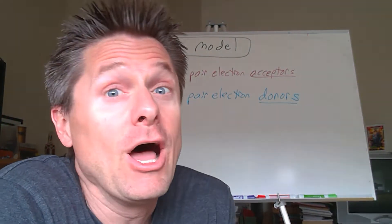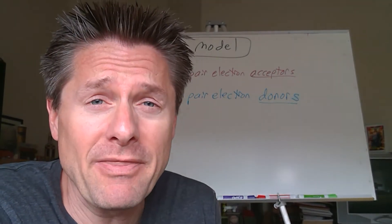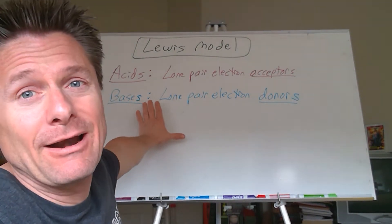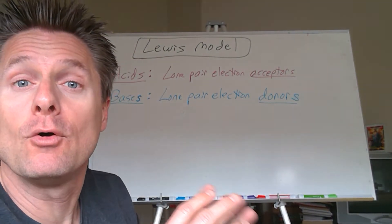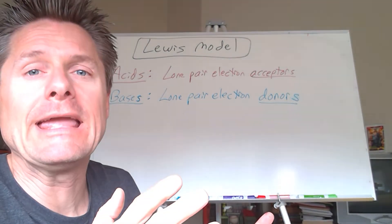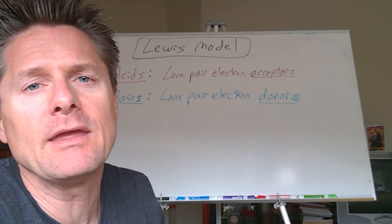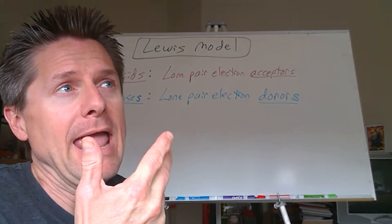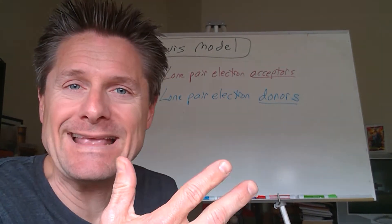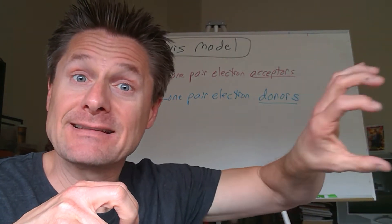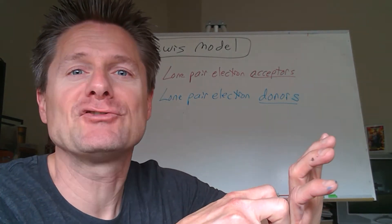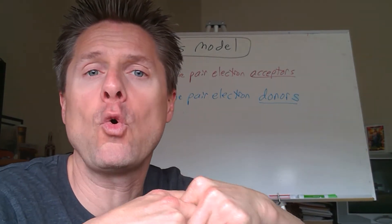Our last concept, number three, the Lewis model or concept. I wonder who developed this one. Chemists have a habit of naming things after themselves. So in this scenario, acids are lone pair electron acceptors, and bases are lone pair electron donors. A little bit different way of looking at this. But a Bronsted-Lowry base will have an atom in it that has a lone pair of electrons on it. And then the Lewis acid has an atom on there that really would like to attach to that lone pair. And that creates what's called a coordinate covalent bond.